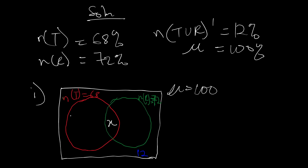The number of people who own television is 68 — the whole circle. The part representing both television and radio is X, so the number who owned only television is 68 minus X. Similarly, the number of people who owned only radio will be 72 minus X.